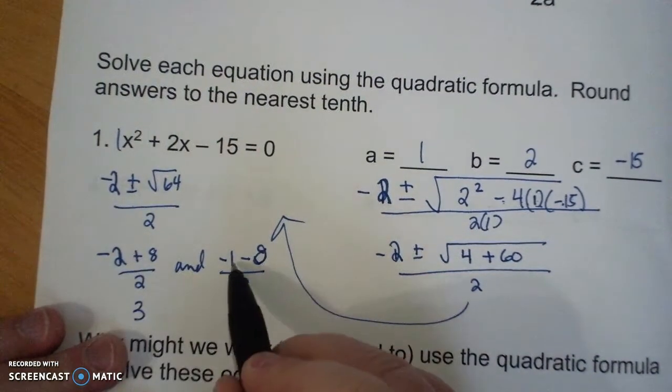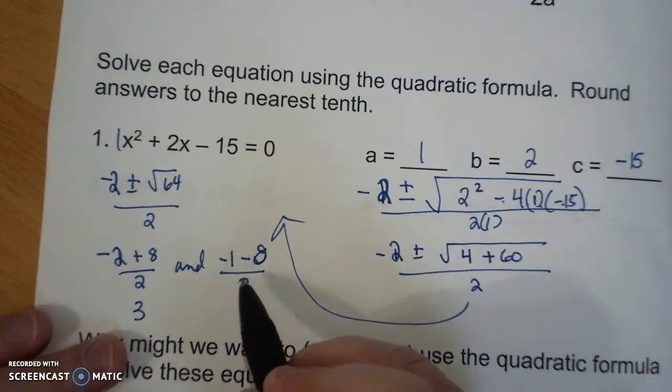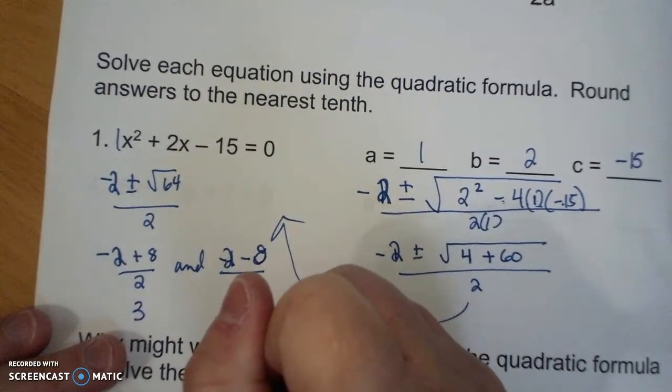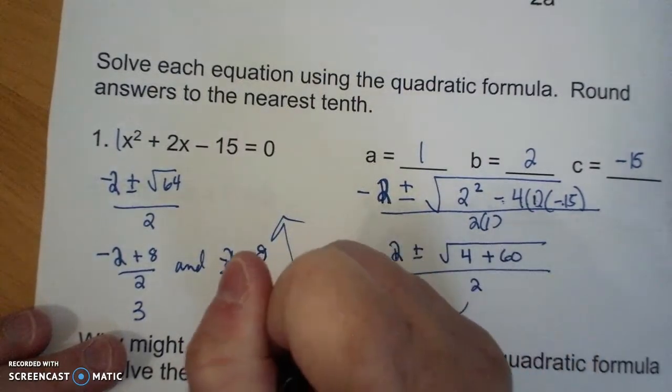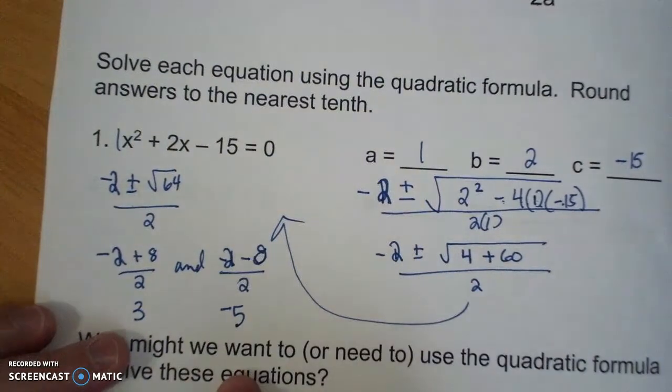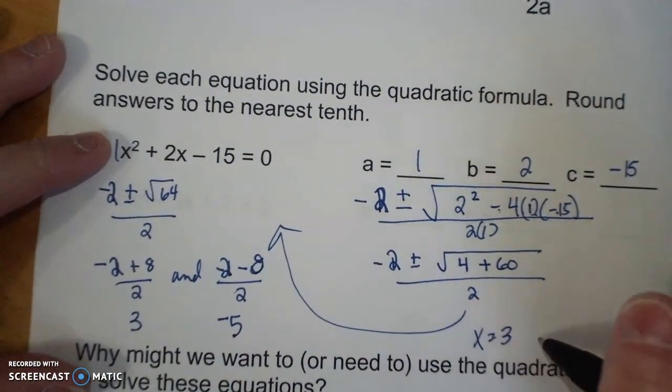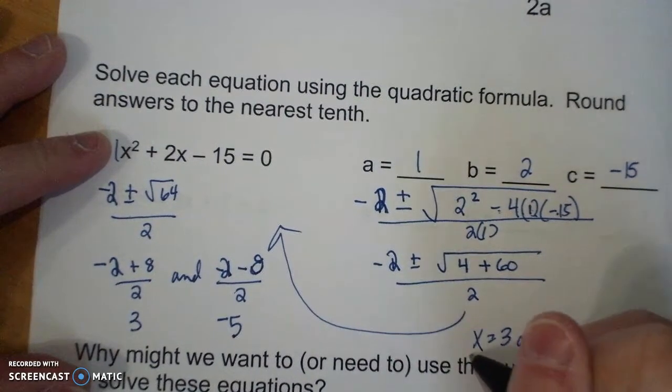So that is 6 over 2, which is 3. And that is negative 10 over 2, which is negative 5. And so you still get the same answers, that x equals 3 and negative 5.